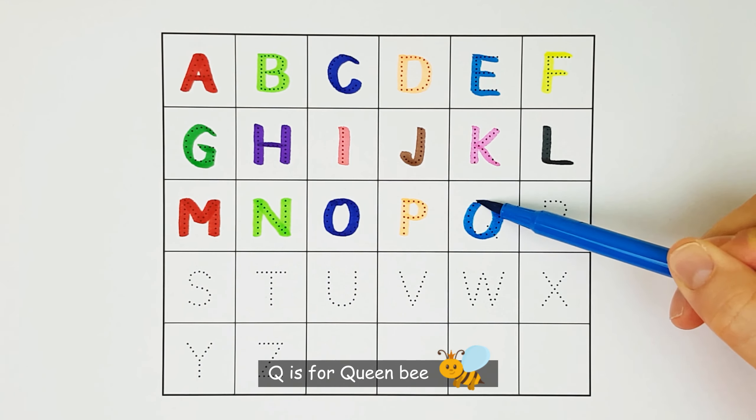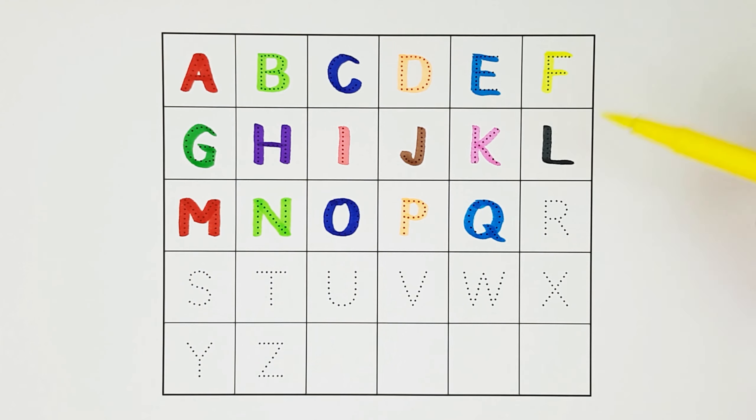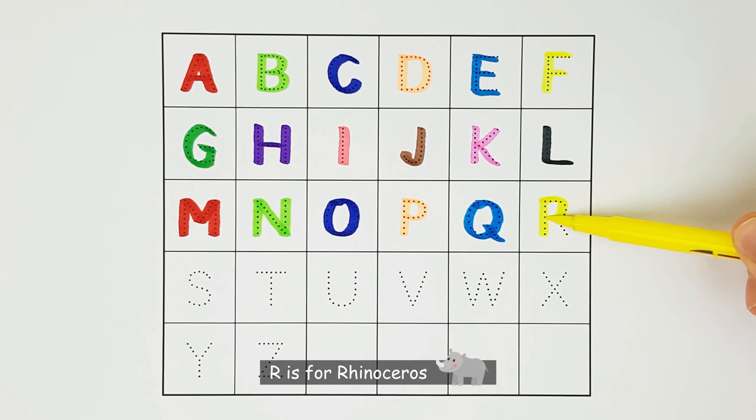Q. Q is for queen bee. Q. R. R is for rhinoceros. R.